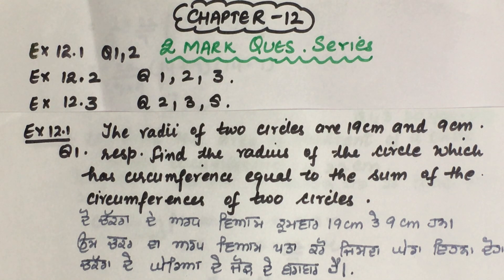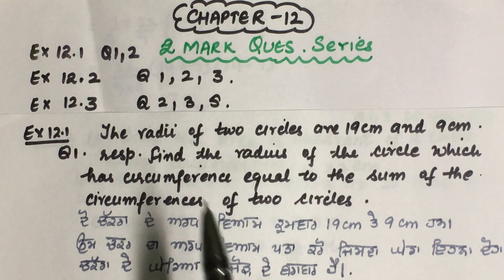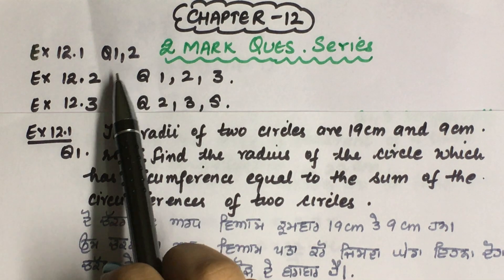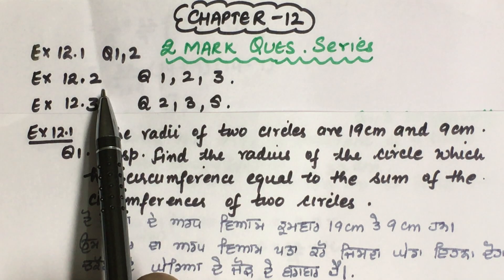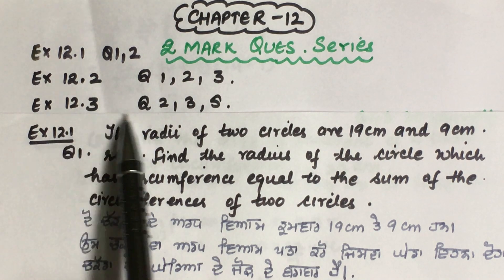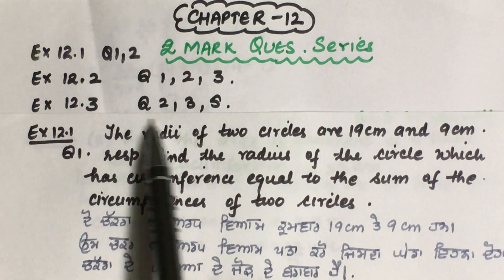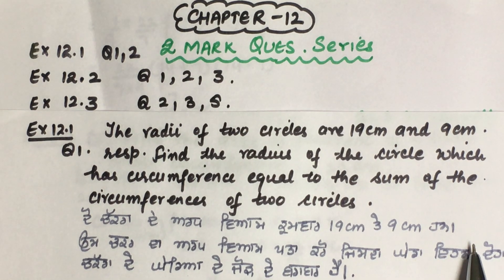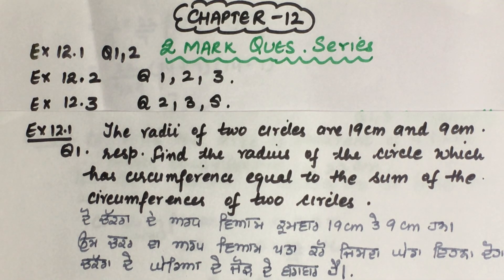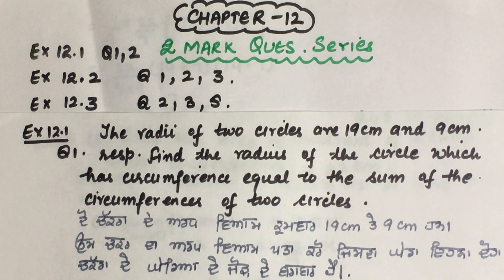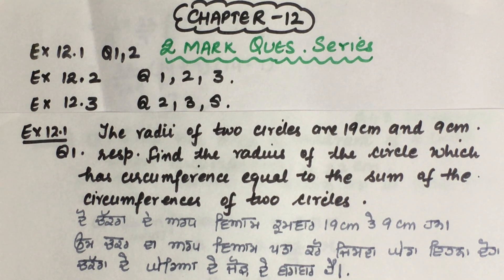Now let's move to the most important two-mark questions from Chapter 12. There are 3 exercises: 12.1, 12.2, and 12.3. From 12.1, questions 1 and 2 are important; from 12.2 and 12.3, three questions total — so eight two-mark questions from this chapter. My main motive is concept clarity. If I haven't covered any question and you have a doubt, you can always ask me in the comments.